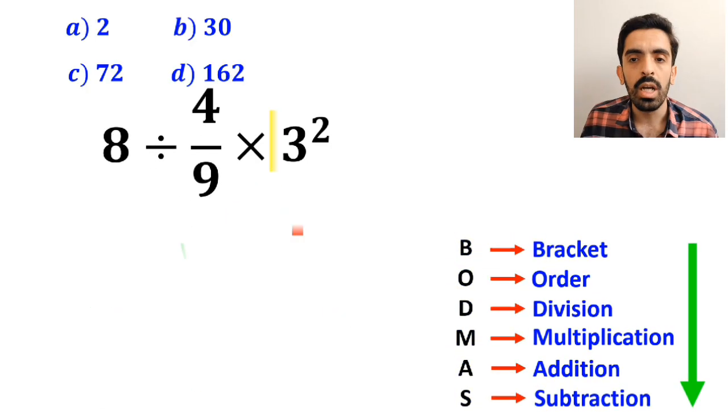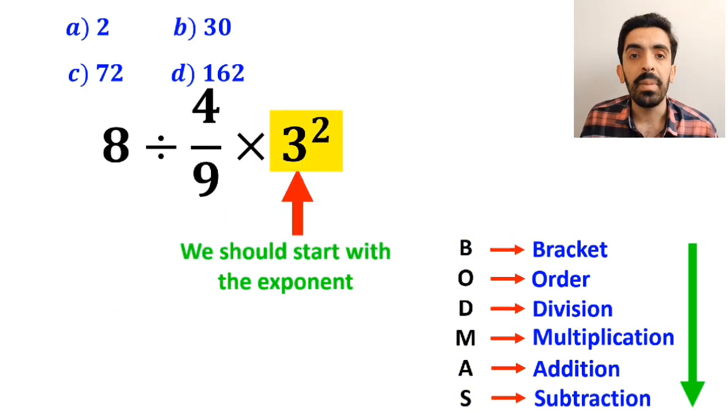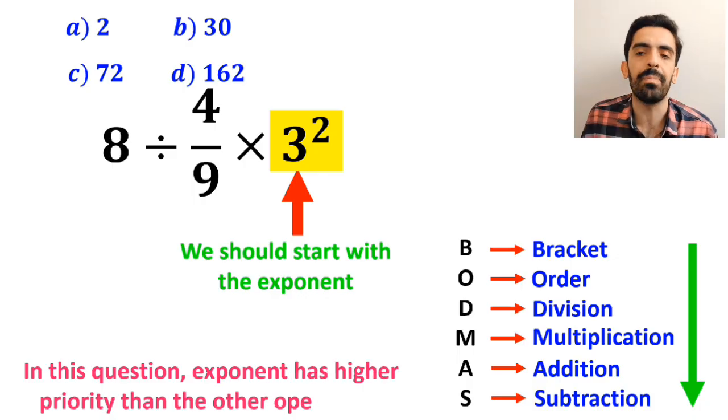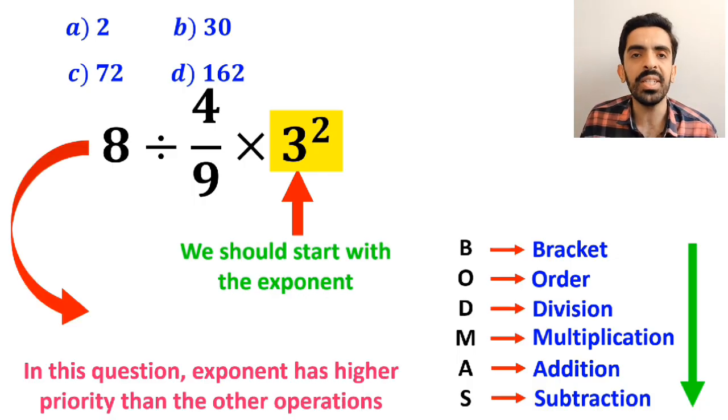According to the BODMAS rule, we should start with the exponent, because in this question, exponent has a higher priority than the other operations. So, instead of the original expression, we can write 8 divided by 4 over 9 times 9.